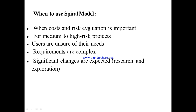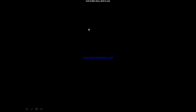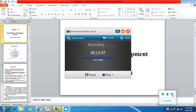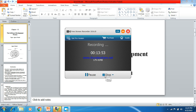The spiral model is the best among prescriptive process models for these scenarios. The next video will cover agile process development. You can ask questions by call or message. Thank you.